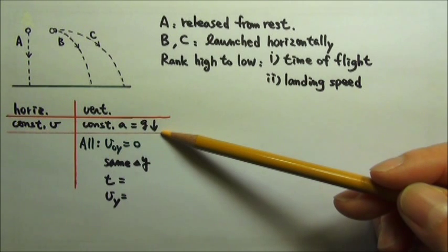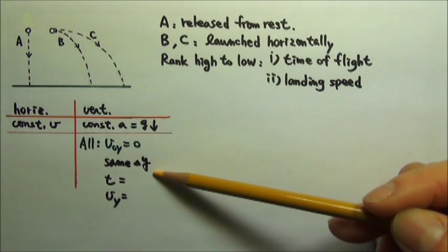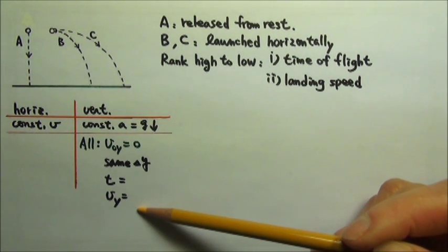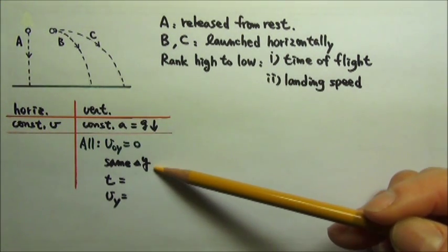Since they go through constant acceleration motion in the vertical direction, when we know three things, we can find the fourth and fifth. Because all three of these are the same for A, B, and C,